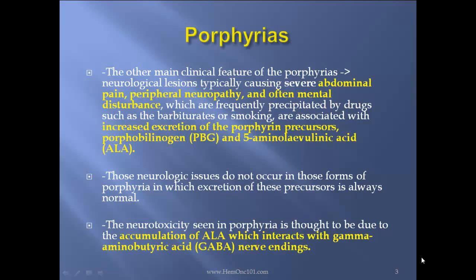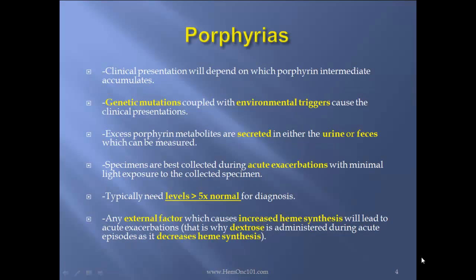Those neurologic issues do not occur in those forms of porphyria in which excretion of these precursors is always normal. The neurotoxicity seen in porphyria is thought to be due to the accumulation of ALA, which interacts with GABA nerve endings. Clinical presentation will depend on which porphyrin intermediate accumulates. Genetic mutations coupled with environmental triggers cause the clinical presentations. Excess porphyrin metabolites are secreted in either the urine or feces, which can be measured.